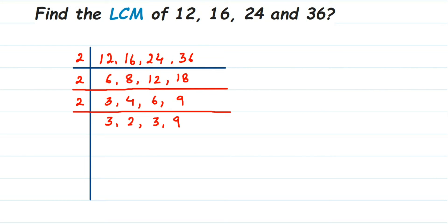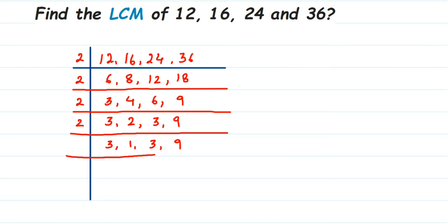We still have 2 in this step, so we take 2 again. 3 doesn't go, so write down 3; 2×1=2; the other number is not divisible so just write it down. Now we have 3 and 9, so we take the next prime number, 3: 3×1=3, write down 1, and 3×1=3.